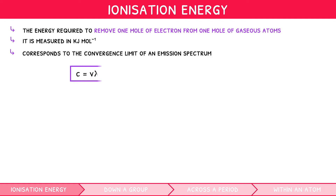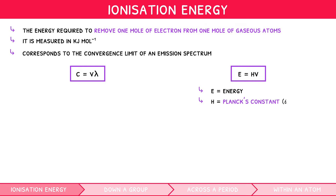The formula C equals V times lambda was also introduced previously. However, at higher level, there is an additional formula you need to be aware of when discussing electron energies. This is E equals H times V, where E stands for energy, H stands for Planck's constant (6.63 times 10 to the minus 34), and V stands for frequency. Substituting the previous formula into this new one, we can also create a third equation: E equals H times C divided by lambda.